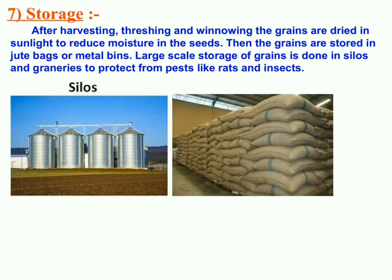The last step is storage. If storage is not done in a well-maintained order, crops get destroyed. Some seeds need dry storage and others need cold temperatures. At large scale, they are kept in silos and granaries. At small scale, grains are stored in bags or metallic bins. Proper storage prevents food from getting spoiled and ensures availability of fruits and vegetables throughout the year.